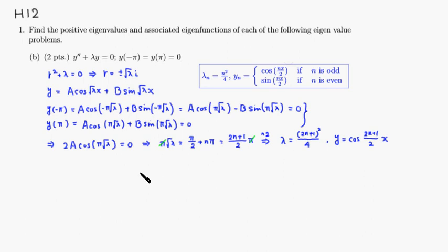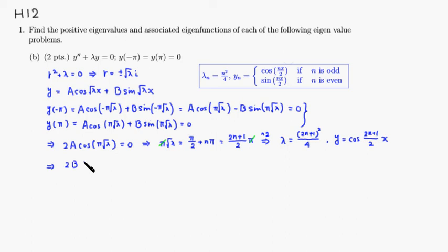For the other case, we subtract one equation from the next. The cosine terms cancel out, and you get 2B sine of pi times square root of lambda equals zero.